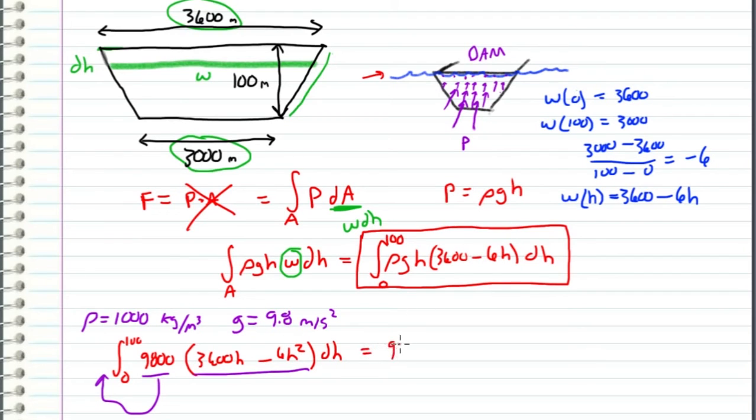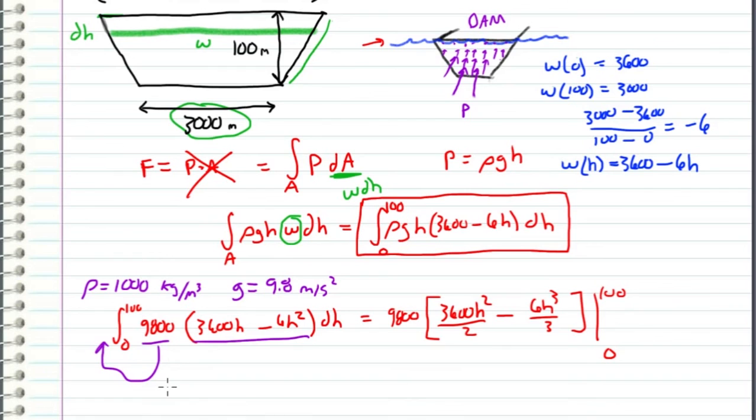This equals 9800 times [3600h²/2 - 6h³/3], evaluated from 0 to 100. When we plug in 100, we get 9800 times (3600 × 100²/2 - 6 × 100³/3).